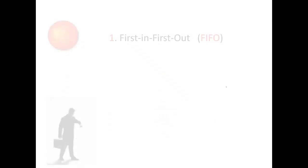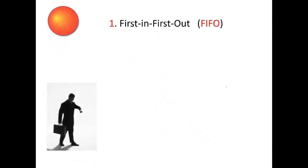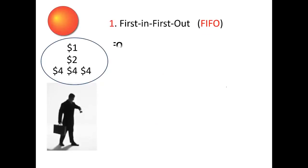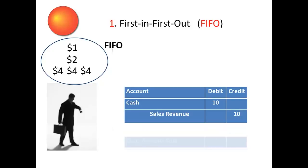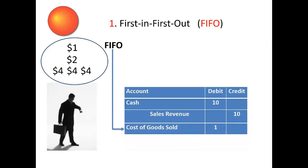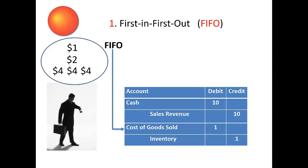First In, First Out – FIFO. Management assigns the unit cost of the first unit purchased in to become the unit cost of the first goods sold out. This requires a debit to cash of $10, assuming a cash sale, and a credit to sales revenue of $10; plus a debit to cost of goods sold for $1, increasing that expense, and a credit to inventory of $1, decreasing inventory.